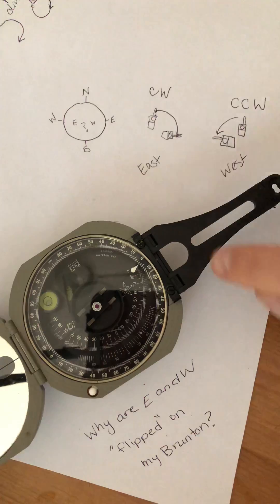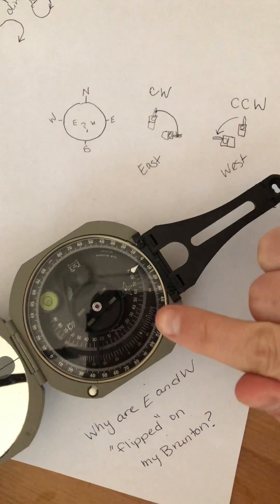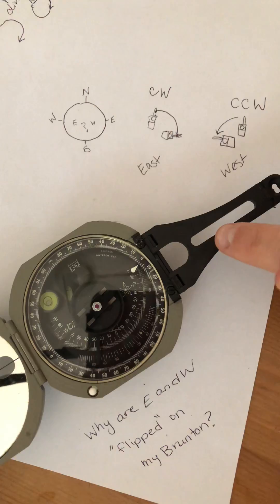So here's an example. Right now I have the Brunton set up to be pointed north. So the needle and the Brunton right now are both pointed north.